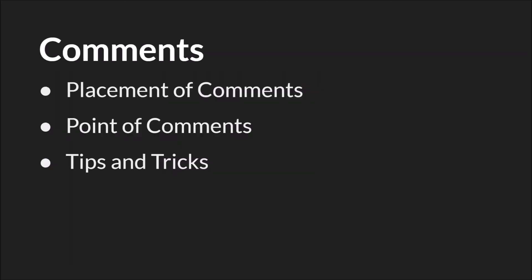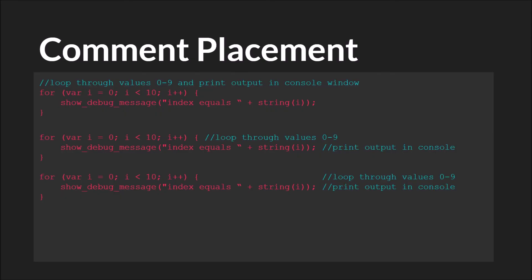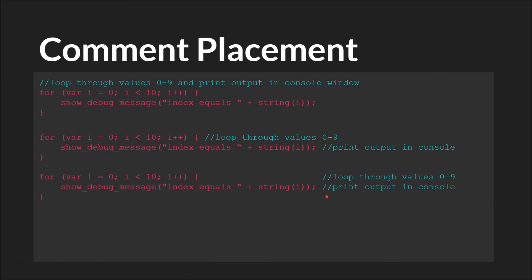Last but certainly not least, we'll talk about comments. We're going to cover three specific things: where you place them, the point of comments in general, and some tips and tricks. There are three main places to put comments: before the code you're commenting on, after the code on the same line with a single space, or at the end of each line tabbed over so they all line up. I tend to use the first form, but the aligned form is nice too. The main problem with that third form is it's easy to let it fall out of use as you change code.